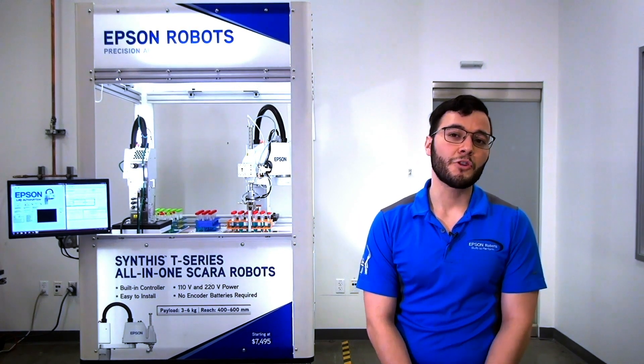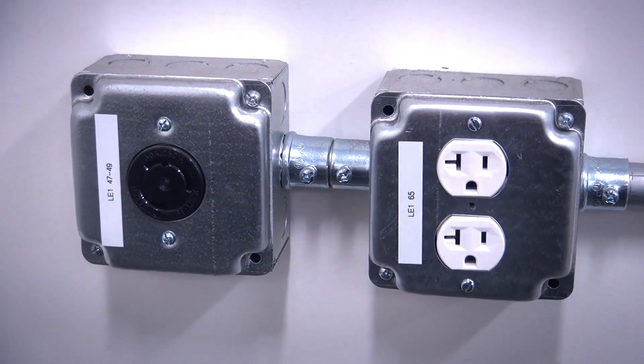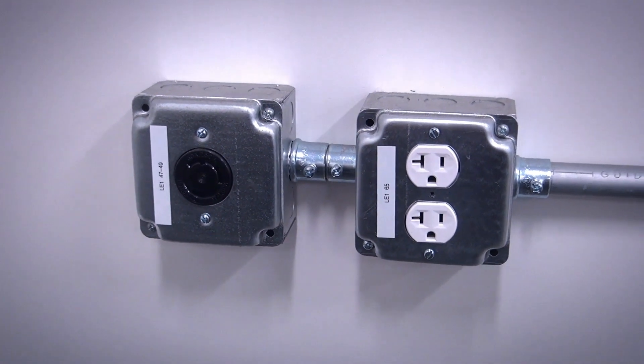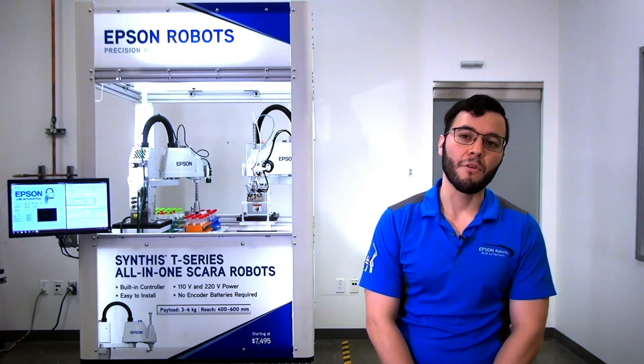Epson's all-in-one series is able to run off of 120 volt or 208 volt single-phase electricity. That means you can plug this into a standard wall outlet just like you would a printer or projector, but you can also have the option of plugging it into an industrial power supply like 208 volt single-phase.